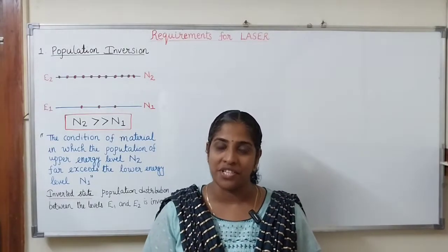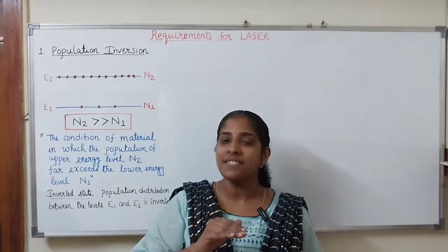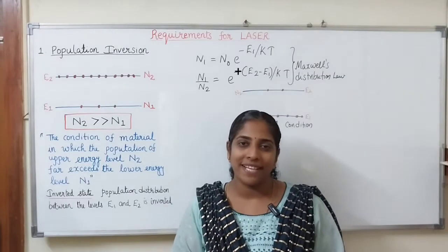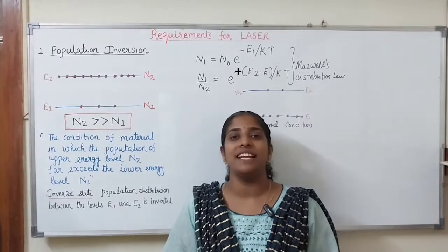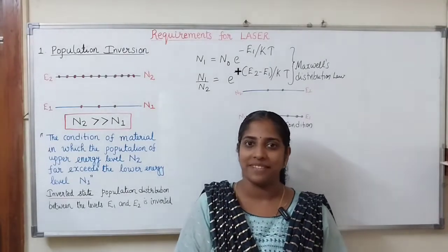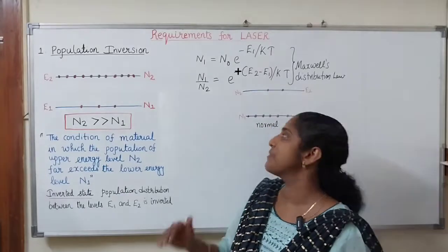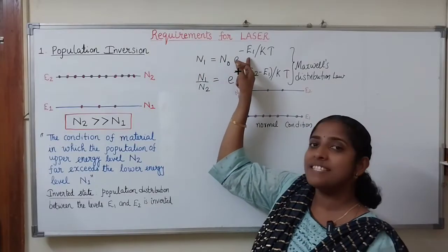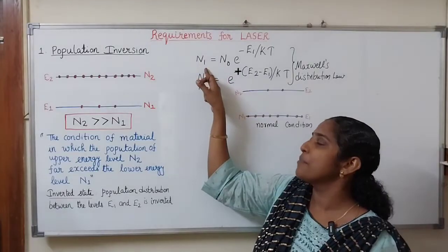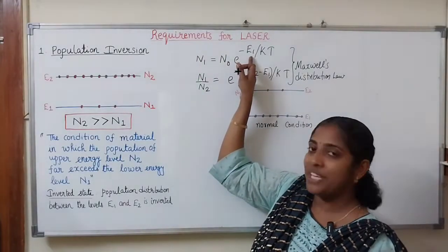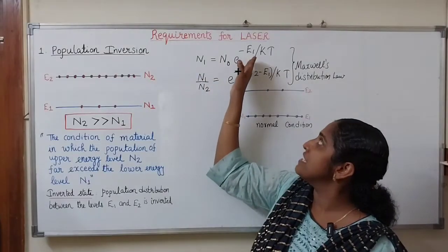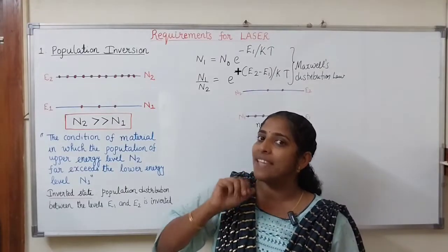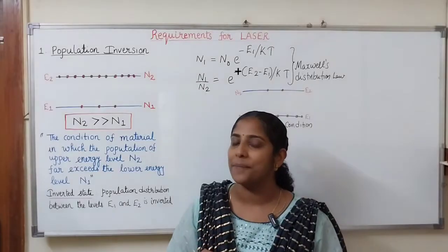What is meant by population inversion? It is the inverted state of population. Under normal condition, the number of atoms in the excited level is less than the number of atoms in the lower level. According to the Maxwell-Boltzmann distribution law, the number of atoms in an energy level is decreasing exponentially with the energy of that level, where N1 is the number of atoms in the level with energy E1. As the energy of a level increases, the number of atoms in that level decreases exponentially. This is the normal condition under thermal equilibrium.